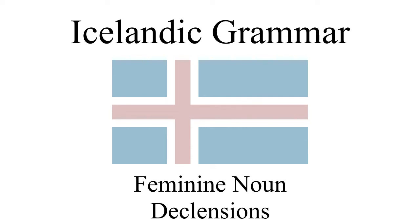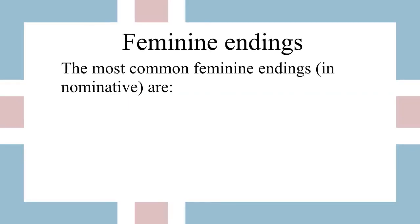Hi, and welcome to Icelandic for foreigners. In this episode, we're going to be talking about feminine noun declensions. I'll be going over the most common feminine noun patterns that will hopefully get you started learning these declensions, and then in a later video, I will discuss more irregular feminine nouns. There are four very common feminine endings that will often clue you in that a word is feminine, and that will also tell you how the word behaves in its different forms. The most common feminine endings are: a, no ending (meaning it ends in any number of consonants), un, and ing.